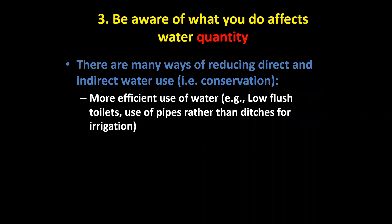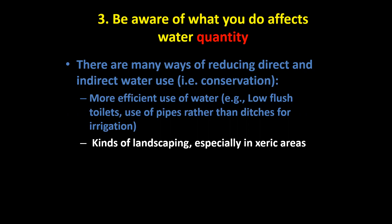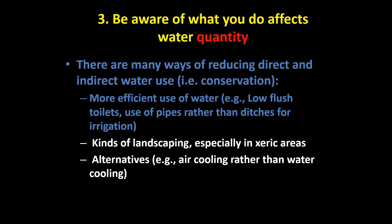There are many ways of reducing direct and indirect water usage — it's all basically conservation of water resources. You can use water more efficiently: use low-flush toilets, or if you're in agriculture, use pipes rather than ditches for irrigation. In whatever industry you're involved in, there are ways to be more efficient. At home and commercially, avoid trying to maintain green lawns in desert areas — use dry vegetation or stones instead. There are also alternatives like air cooling instead of water cooling.